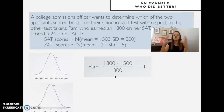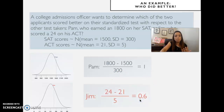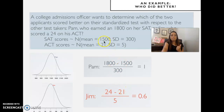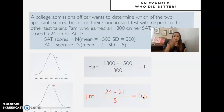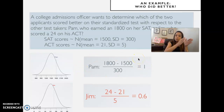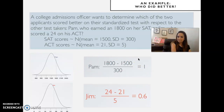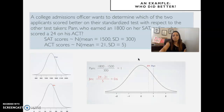Computing how many standard deviations above the mean a score is makes things comparable. Jim's score was 24; subtract the mean of ACT test takers, which is 21, then divide by the standard deviation of 5: that gives 0.6. While Pam was 1 standard deviation above the mean, Jim was only 0.6 — so Pam did better relative to her group.